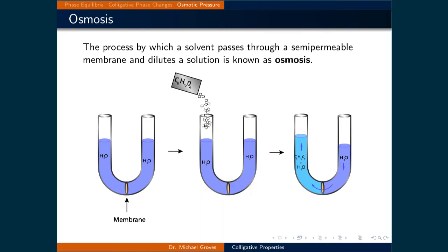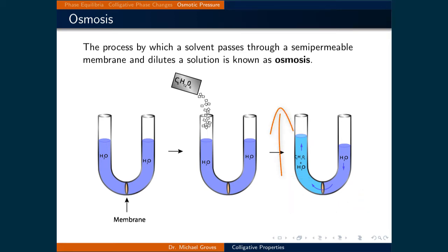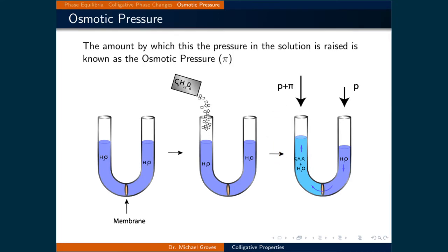Osmosis can be thought of as an entropic process where concentrated components tend to mix. So on the left side there is sugar, and therefore water moves through the membrane to mix with it. The water level rises on the left side because the sugar cannot move to the right side, where it would normally do so if the semi-permeable membrane did not exist. The change in height of the solvent is typically quantified as an increase in pressure on the dilute mixture side relative to the pure solvent side.